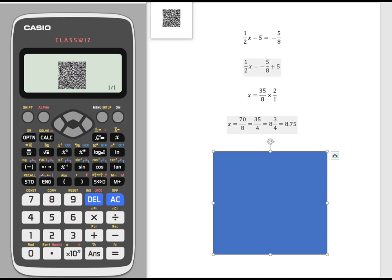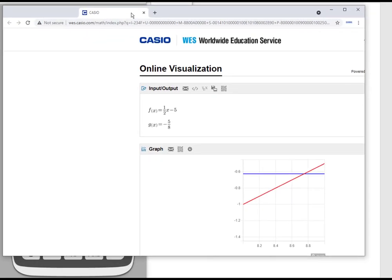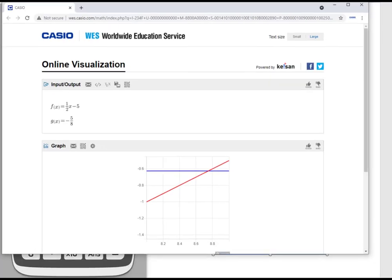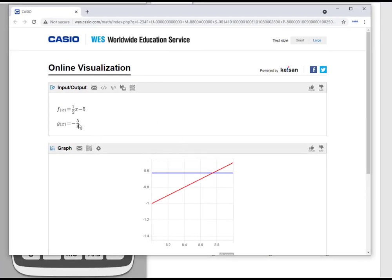It brings up a visualization of that graph. So here's my two equations, the functions that I put in the table, and notice it actually graphs those two lines. Here's the negative five-eighths, and here is the one half x minus five. It's showing you that this right here is where the solution is, 8.75. So it's also letting you visually see what that solution actually means—it's where there's the intersection of these two functions. That's a really nice extra feature with the FX991EX scientific calculator.